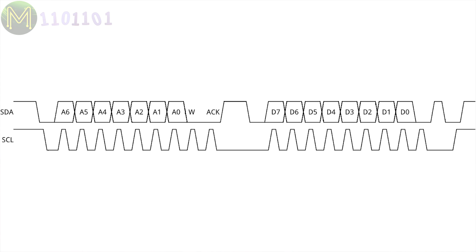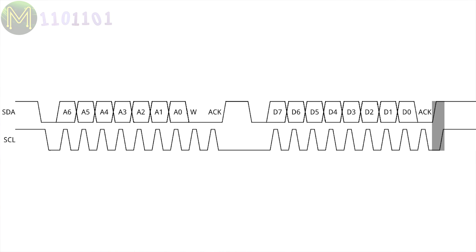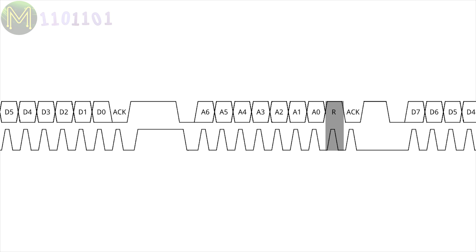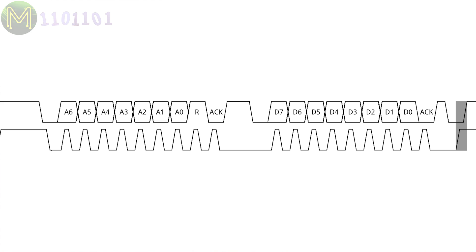SCL and SDA are then kept high to free the bus. When reading from a slave, the sequence initially starts out the same as a write. But this is where it deviates. At this point, the master will send another start sequence, followed by an address frame, with the first 7 bits being the address, but the 8th bit indicating a read. Then another slave ACK, followed by the slave sending 8 bits of data back to the master, with the master sending an ACK back to the slave on the next clock. Once complete, the master will indicate another stop condition, freeing the bus.